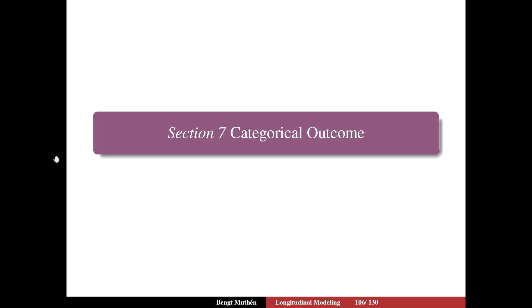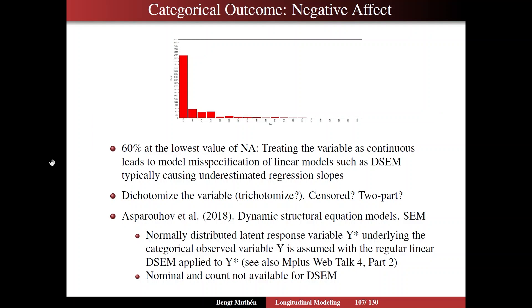On slide 106, I turn to a categorical outcome. I'm going to take the example of negative affect, where earlier we saw this histogram with a very strong floor effect — 60% at the lowest value — and we also see a sharp drop off towards a long tail. Treating the variable as continuous will lead to model mis-specification of linear models such as those used with DSEM, and that typically causes underestimated regression slopes. So the question is, what do you do with variables like this, which tend to appear quite frequently?